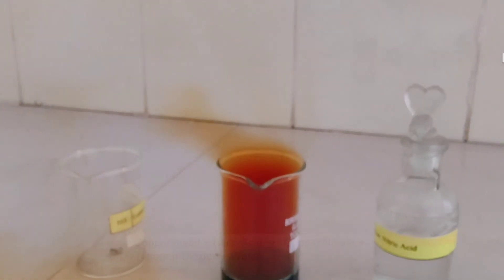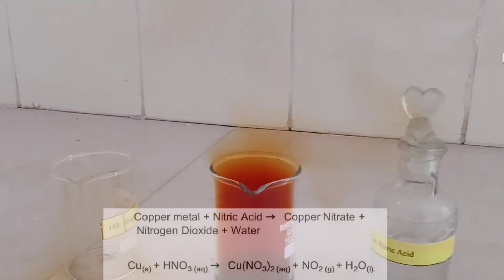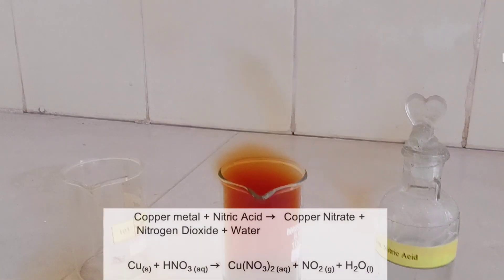The reaction of copper with nitric acid takes place in two stages. At the first stage, the acid oxidizes the copper to copper oxide, releasing nitrogen dioxide.